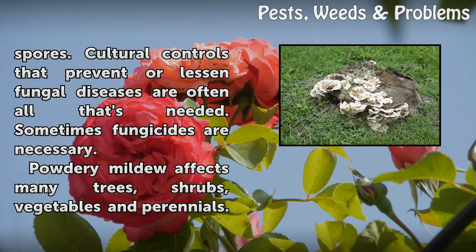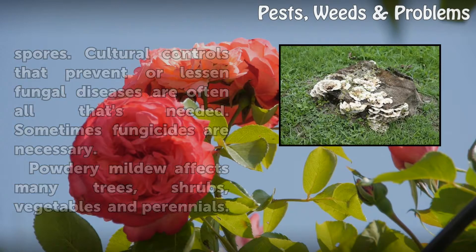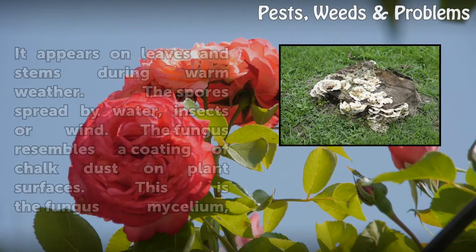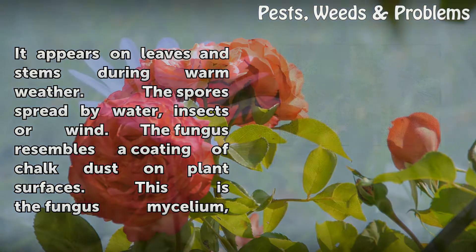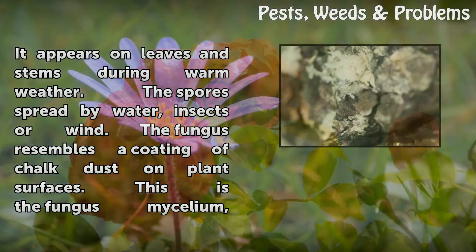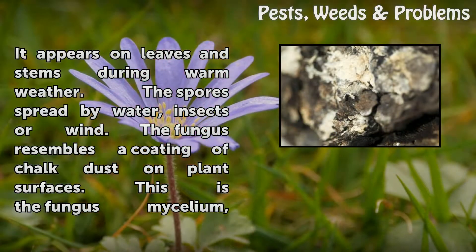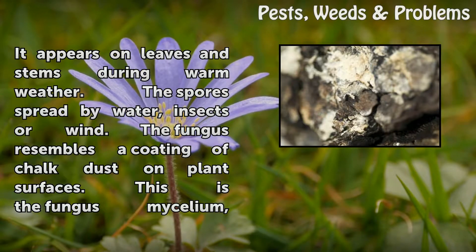Powdery mildew affects many trees, shrubs, vegetables, and perennials. It appears on leaves and stems during warm weather. The spores spread by water, insects, or wind. The fungus resembles a coating of chalk dust on plant surfaces.